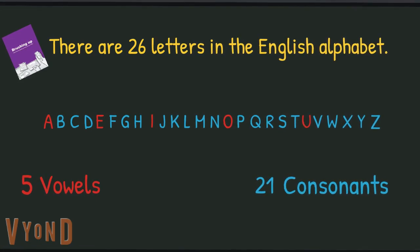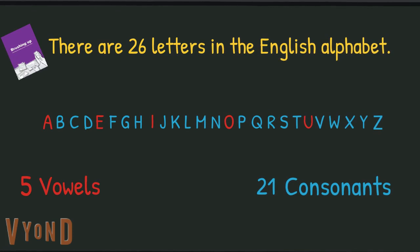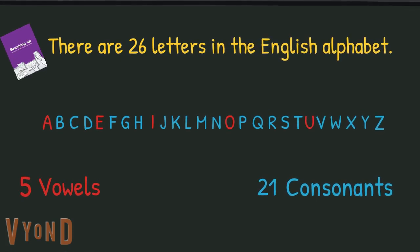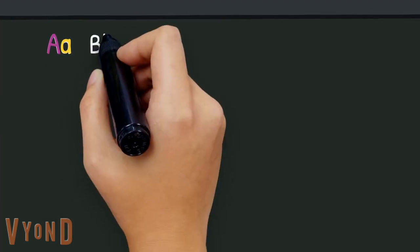Keep an eye on the vowels A, E, I, O, U. We'll come back to them in a minute. Each of these letters can be written in uppercase or capital letters or lowercase, smaller letters.